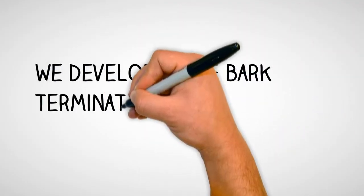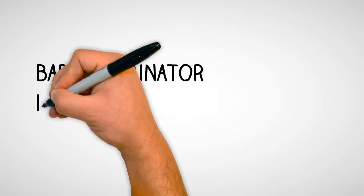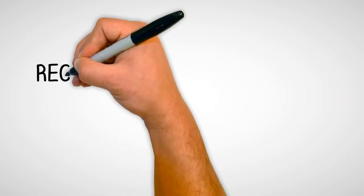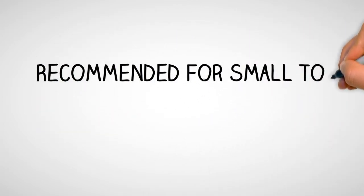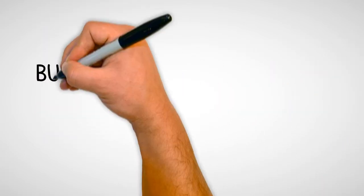We developed the Bark Terminator for dogs that are aggressive barkers or just plain stubborn. The Bark Terminator is designed to be water resistant. Recommended for small to medium-sized dogs less than 40 pounds.